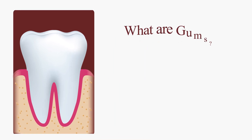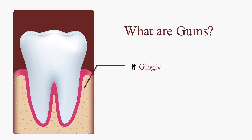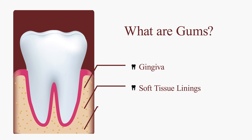So what are gums? Gums are the soft tissue linings in the mouth and they are called gingiva. They appear firm and are tightly bound to the bones under the soft tissues. Gums act as an anchoring point for our teeth and also help teeth in holding their positions firmly.